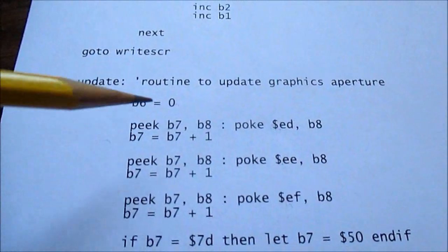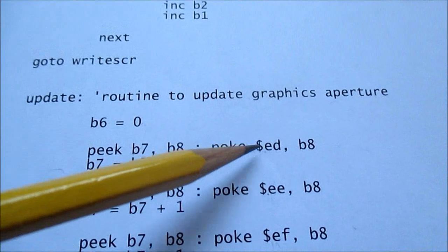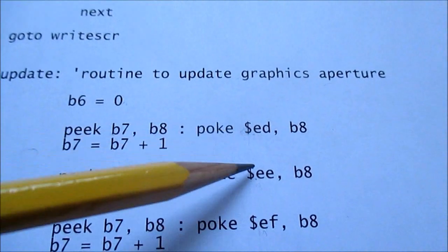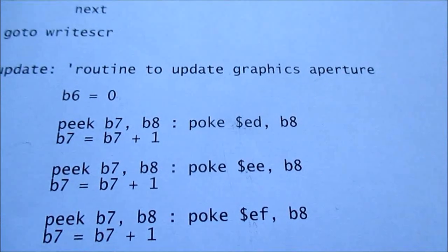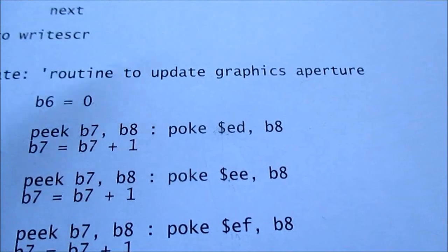Okay. This memory area here, which is 3 bytes, ED, EE, and EF, that's my graphics aperture. In a way you can think of it as a frame buffer. But here I'm calling it a graphics aperture.